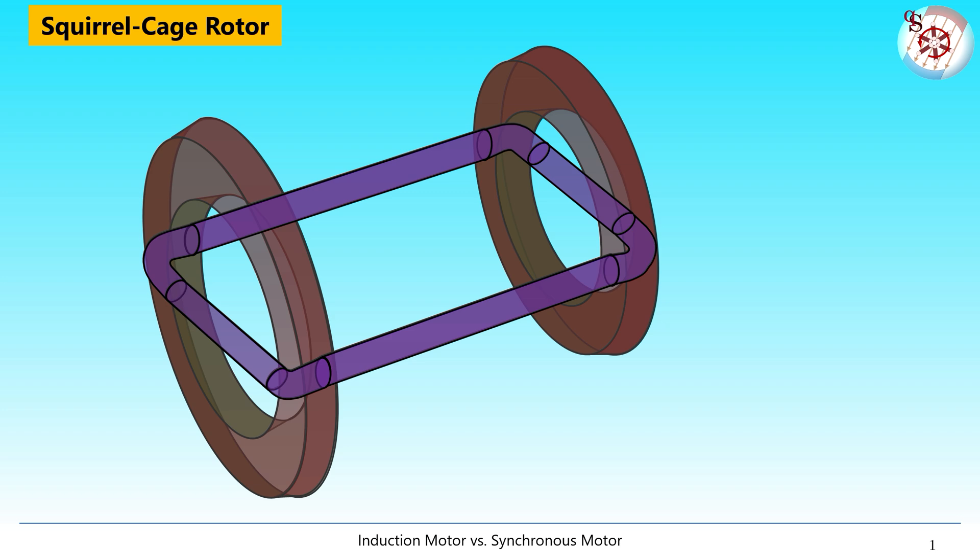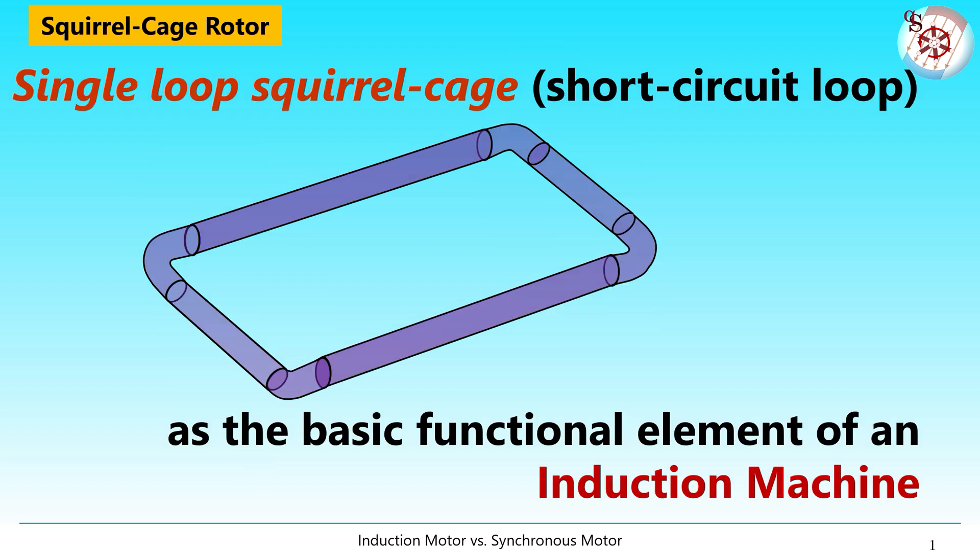In a way this approach is comparable to the analysis of one cylinder in, let's say, a 12-cylinder combustion engine. So here it is, the one cylinder, single loop, squirrel cage rotor of an induction machine.